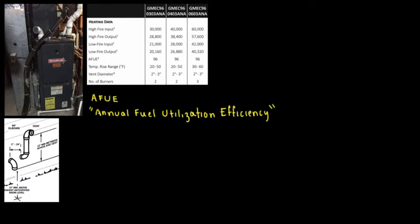For example, in this case we have a Goodman furnace and this is the data that we have for the furnace. Based on the model, you're going to be able to obtain all the data of any manufacturer — it could be Carrier, it could be Goodman, it could be Lennox. You need to know what the model of the furnace is, and then you're going to be able to obtain the input and the output capacity of the furnace. But mainly in here, we're going to explain what the calculation is and how this works.